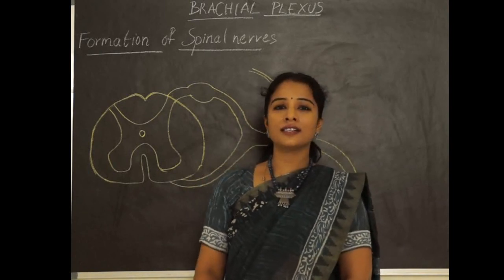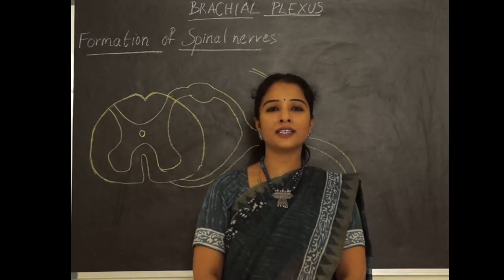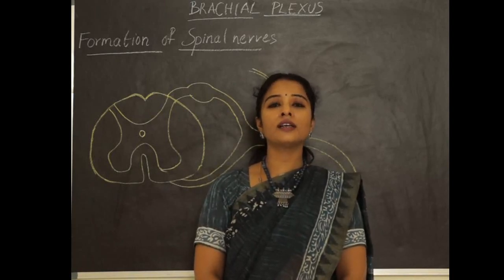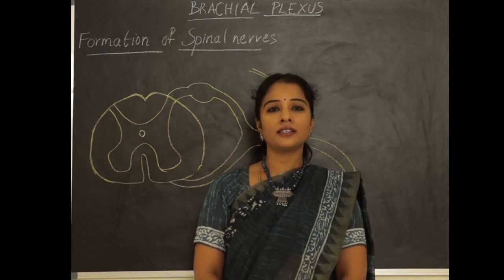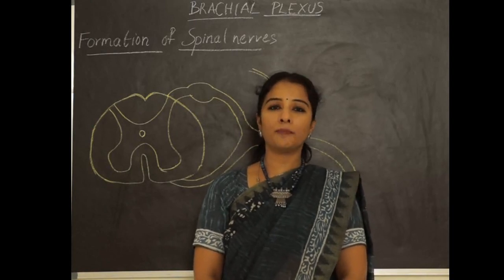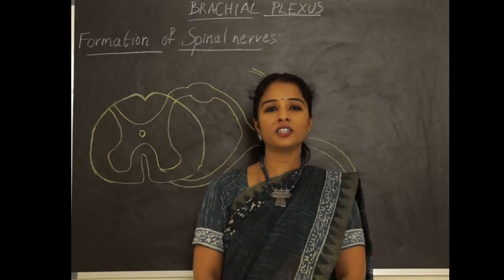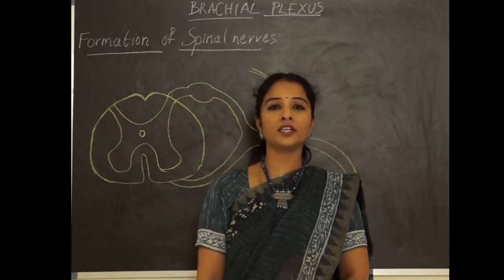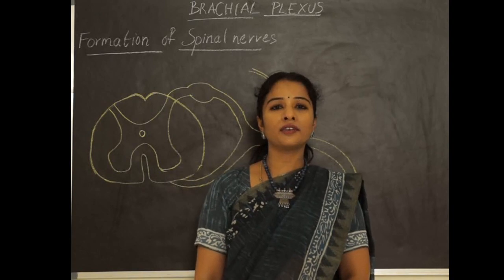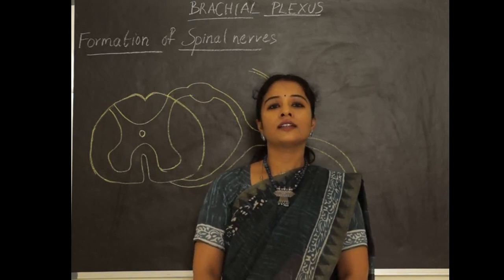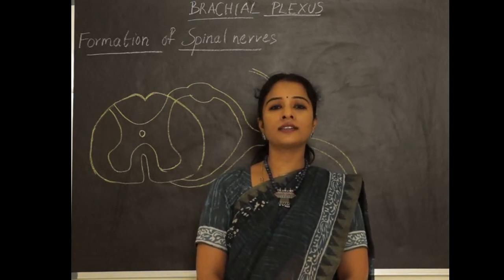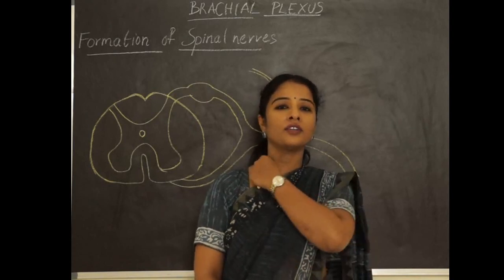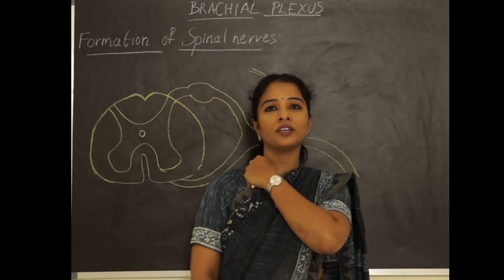Let's start brachial plexus with a case study where a newborn baby was brought to the hospital with the complaint of not being able to move the right upper limb. On examination, we found that the baby's hand was adducted towards the body and the wrist was flexed. This is a typical case where there is an injury to the nerves in the lower part of the neck.